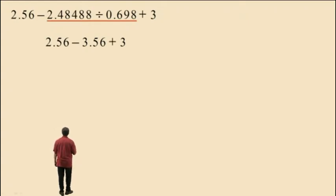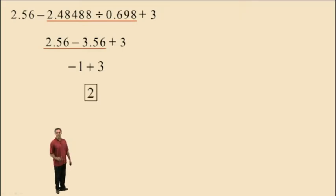Now we have subtraction and addition. Remember, order of operations says when you have subtractions and additions, you must work left to right whichever comes first. The subtraction came first here, so 2.56 subtract 3.56 is negative 1 plus 3 and that answer is 2. Hopefully you did not need a calculator for that last step.